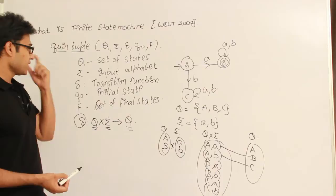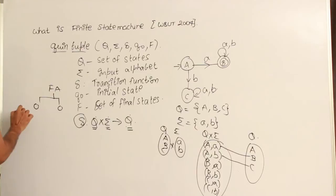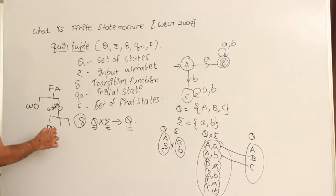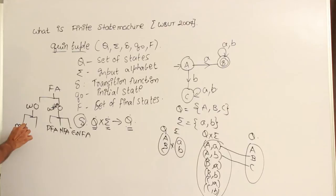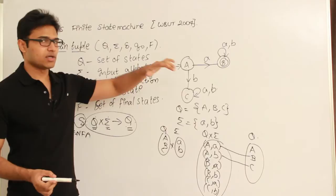Actually, I'm explaining a DFA. Finite automata has various types — finite automata with output and without output. Without output has three types: DFA, NFA, and epsilon-NFA. With output has two types: Mealy machine and Moore machine. I'm taking the example of DFA, which is also a finite automata.